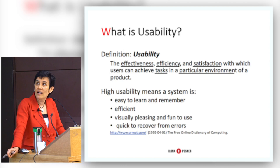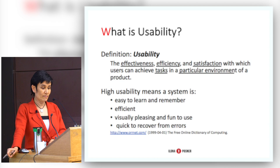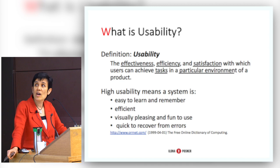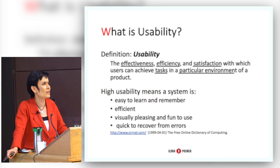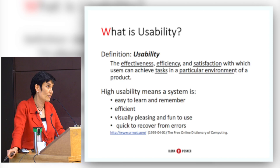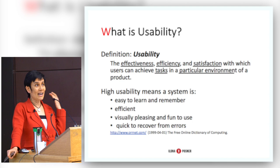High usability involves ease of learning, efficiency, being visually pleasing, and quick recovery from errors. The goals of usability, straight out of the textbook I use in my course, include functionality, effectiveness, efficiency, safety, and memorability. The second time I go to use a system, I should be able to do it more easily than the first — especially for things like doing your taxes, which you do once a year. How about changing clocks? How many of us have to go to a manual to figure out how to change the clocks on all the devices in our lives that don't automatically change — like your car?